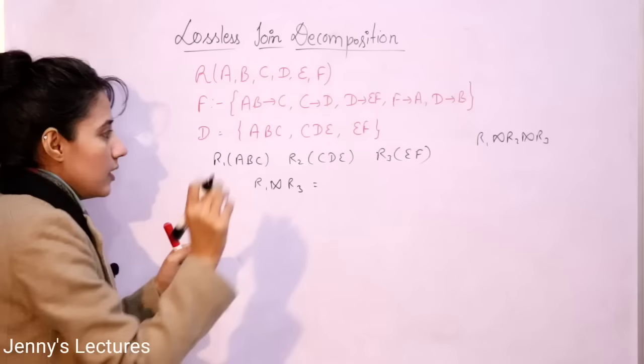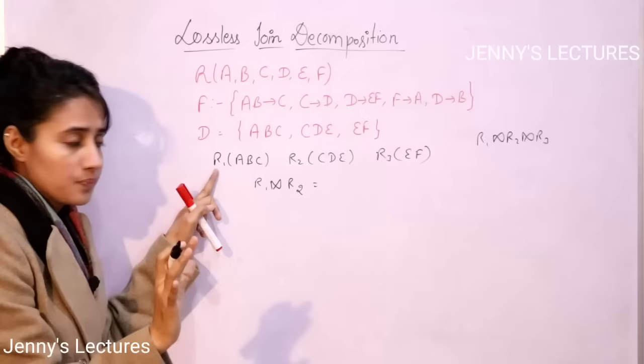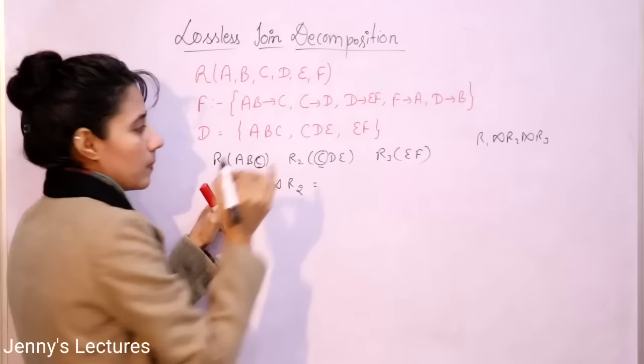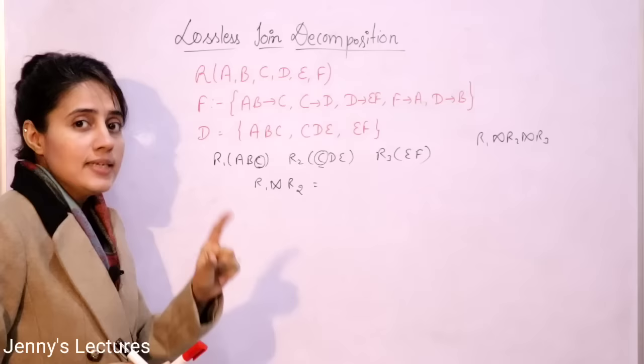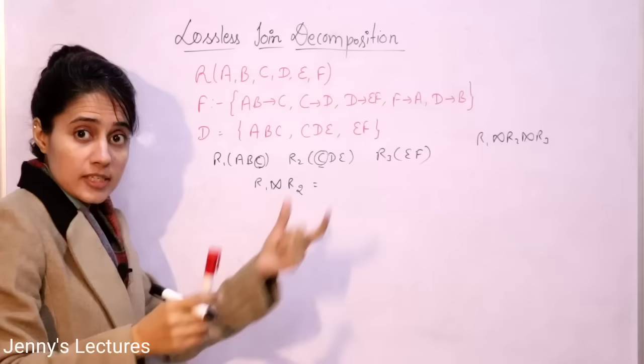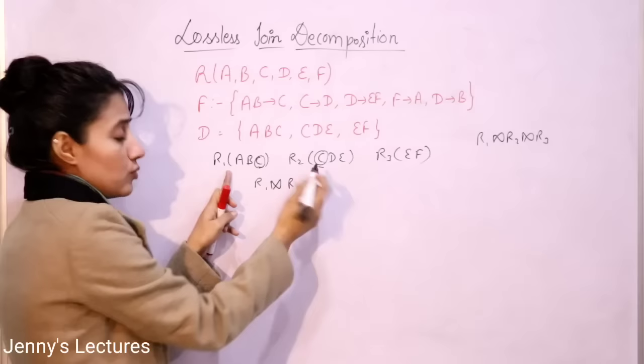Now suppose I check the pair R1 and R2. Is there any common attribute? Yes — the common attribute is C, so R1 ∩ R2 = {C}. The third condition is that C must be the candidate key of at least one sub-relation — either R1 or R2 — because we are performing a natural join on these two. So we need to check whether C is a candidate key.